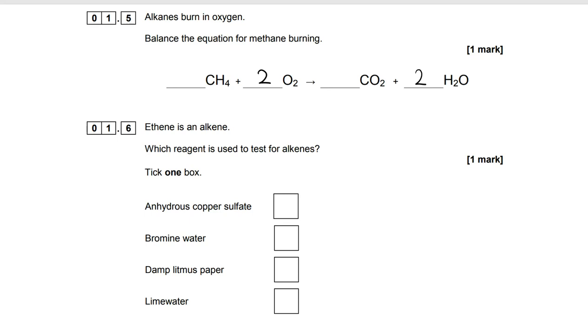Ethene is an alkene. Which reagent do we use as the test for alkenes? Straightforward factual recall here. It's bromine water. And the observation you would make is that alkenes will decolourise brown bromine water.